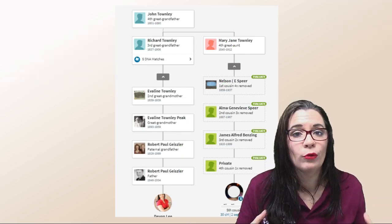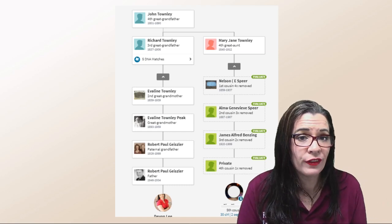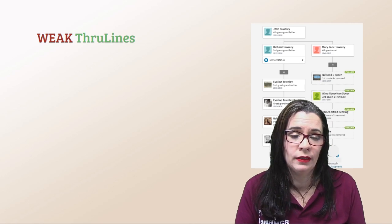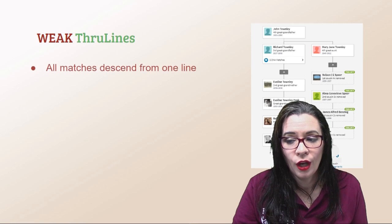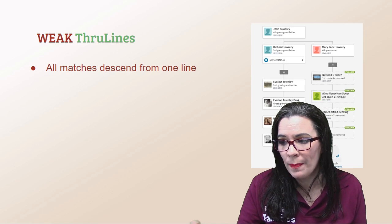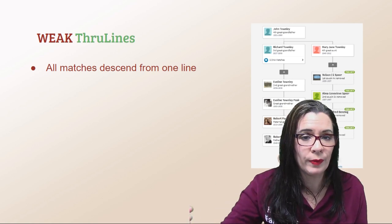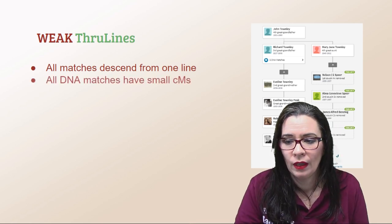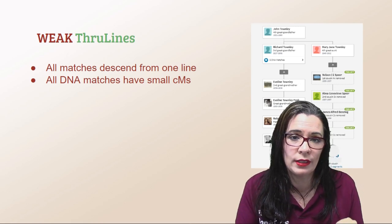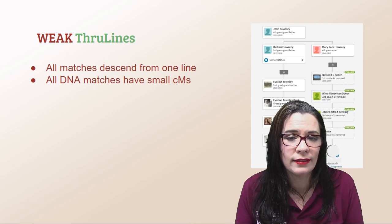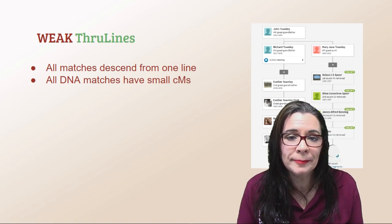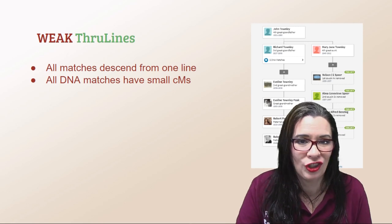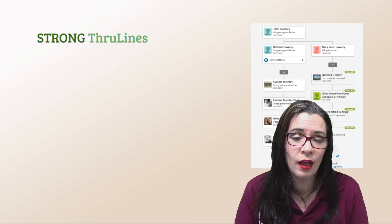Remember to proceed with caution. Dana Leeds of the Leads of Leads method color coding system for DNA matches had this advice: you know you're looking at a weak through line — one that you need to be very suspicious of — when all of your matches descend from one line. If you and a match both only trace back to Mary Jane Townley and that's the only match you have, it could be weak. Additionally, if your DNA matches share small centimorgans — when you have five, two, or one — you might have a weak through line. Not always, but let it be a red flag that you need to investigate further.